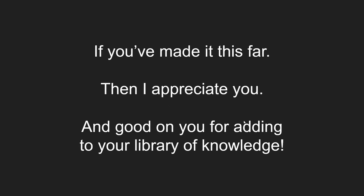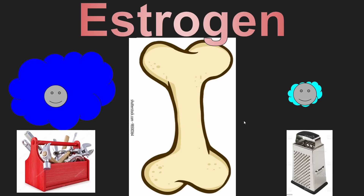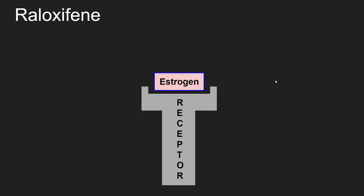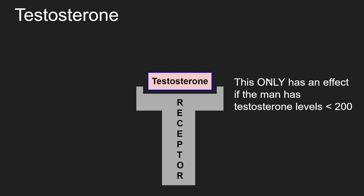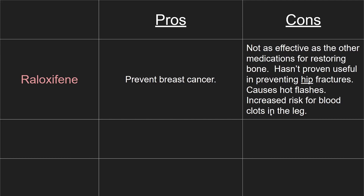Two more and we're finished. Estrogen increases osteoblast activity and decreases osteoclast activity. We have a medication called raloxifene that acts like estrogen. Testosterone supplementation is also used for treatment in men, but only when the man has a testosterone level less than 200. One pro with raloxifene is that it can prevent breast cancer. The cons are it's not as effective as other medications for restoring bone, hasn't proven useful in preventing specifically hip fractures, causes hot flashes, and increases the risk for blood clots in the leg.